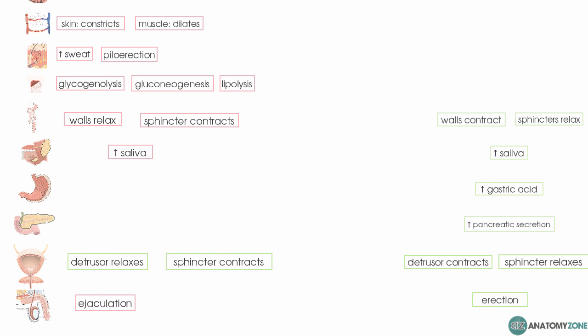You can see how the fight or flight and rest and digest mnemonics can be applied to remember the different functions of the sympathetic and parasympathetic divisions. That's an introduction to the autonomic nervous system.